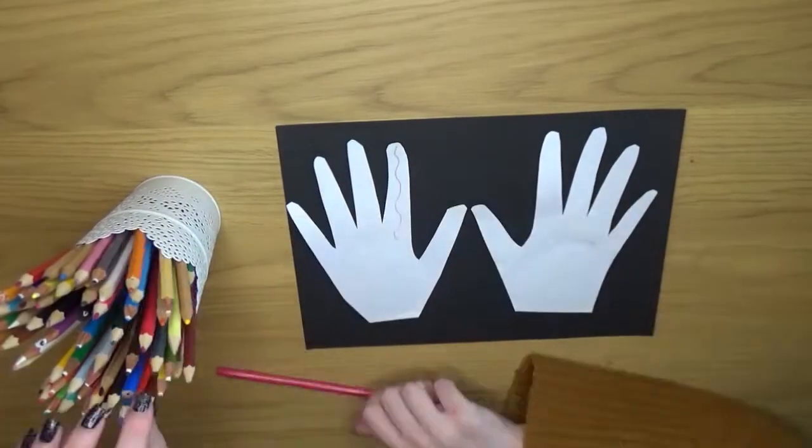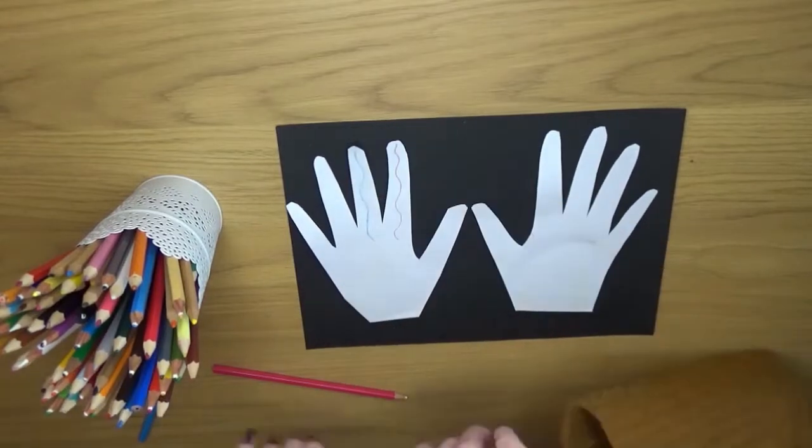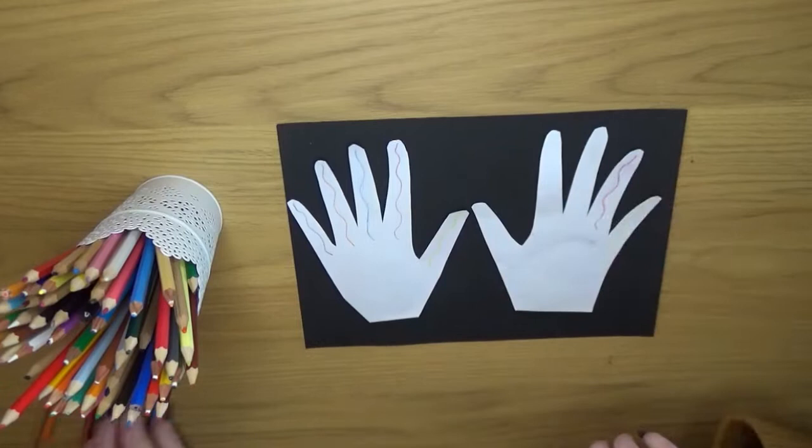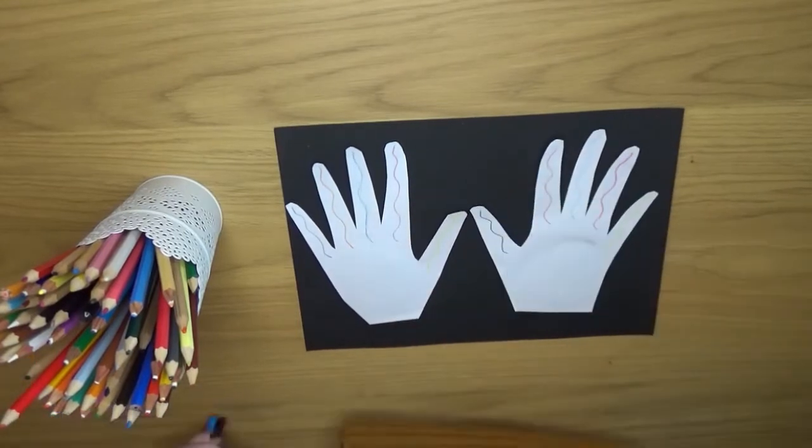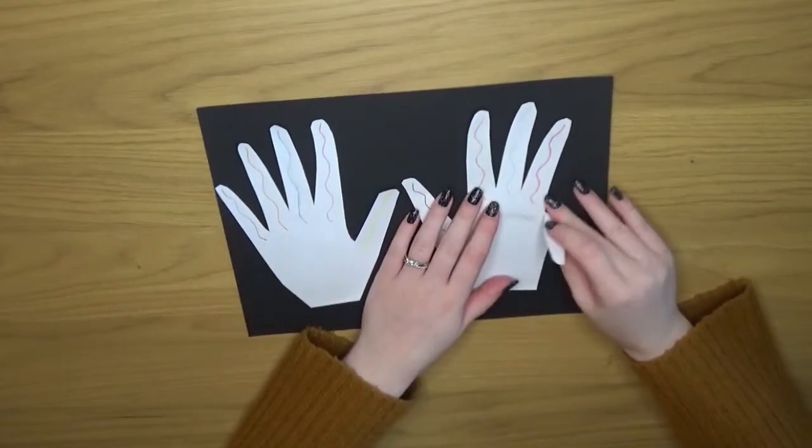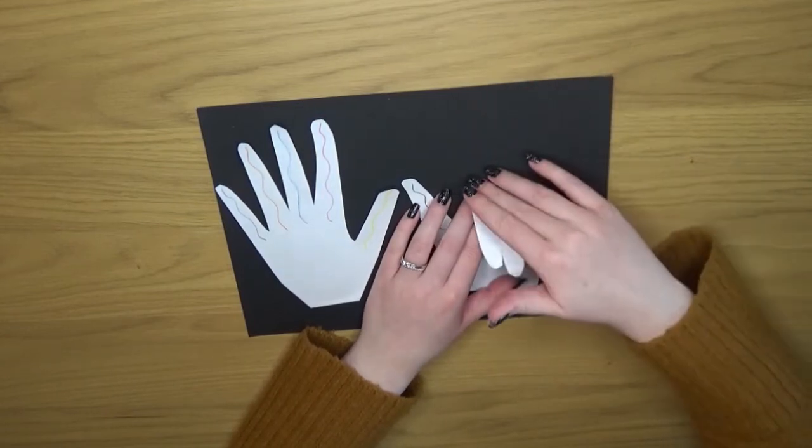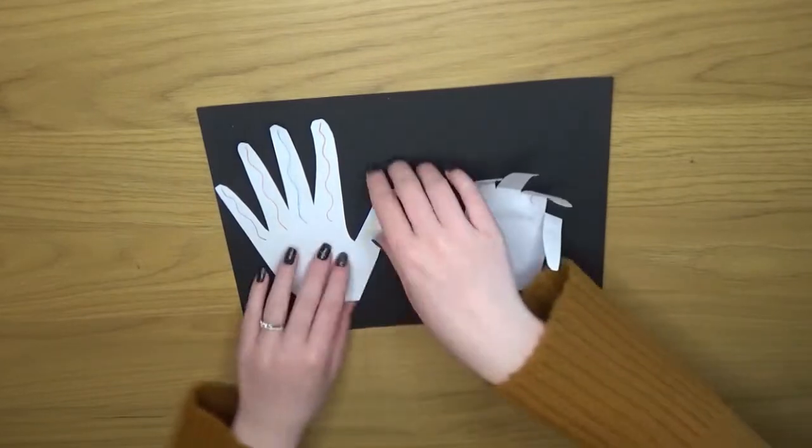Children can then decorate the hands in whichever way they want. For the purpose of this video I've just put on a few squiggles but of course you can get a lot more creative than this to make them more exciting to look at. And then you can use them in exactly the same way as children would use their own fingers but it just makes it a little bit more interesting.